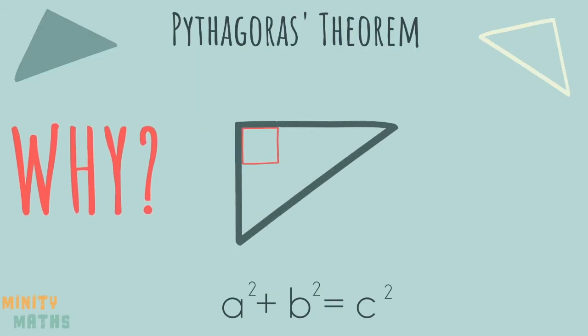So why do we use Pythagoras theorem? We use it to find the length of one of the sides or to find out if a triangle is a right-angled triangle or to find the distance between two points.